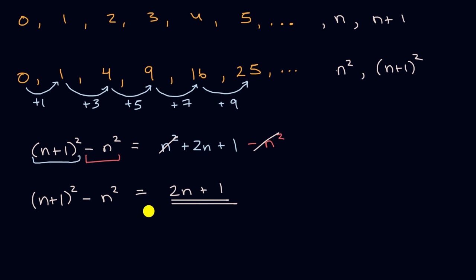So this is pretty neat. We've just used a little bit of algebra, a little bit of what we know about polynomial identities to show that the difference between successive terms in this sequence of integer squares right over here is going to be increasing odd numbers.